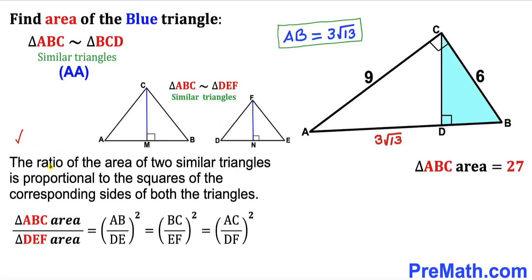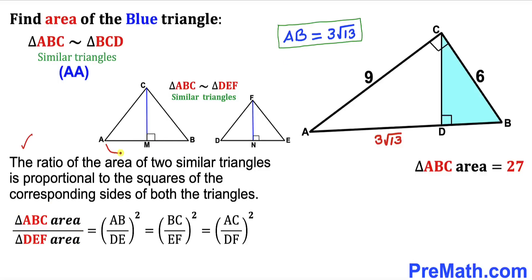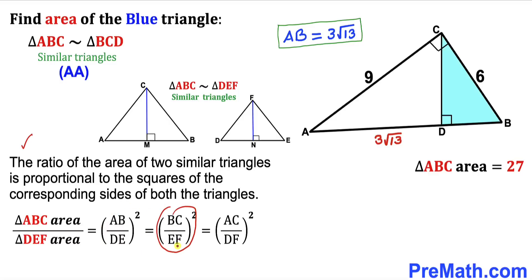Now let's recall this very crucial fact: the ratio of the areas of two similar triangles is proportional to the squares of the corresponding sides of both triangles. If triangle ABC is similar to triangle DEF, then the ratio of their areas equals the square of the ratio of AB to DE, which is also equal to the square of BC over EF, and the square of AC over DF.